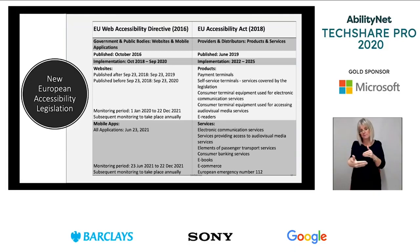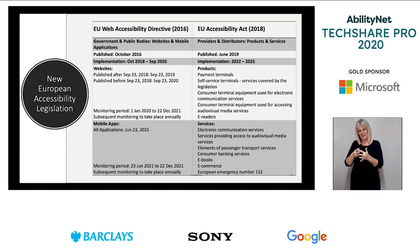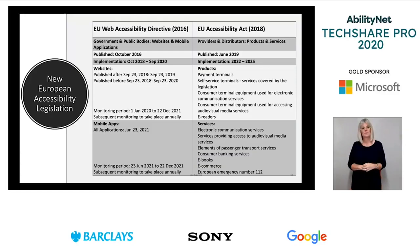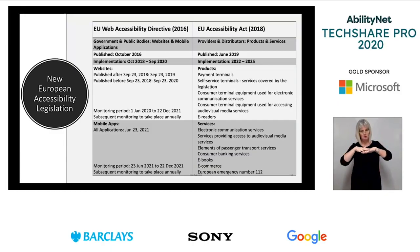In addition, Section 508 of the US Rehabilitation Act governs accessibility of ICT in the Federal Government and has a counterpart in the EU's EN 301549 accessibility requirements suitable for public procurement of ICT products and services in Europe. Section 508 was refreshed in 2018 to WCAG 2.0 Level A and AA in a coordinated effort aimed at international harmonisation with European Commission work on EN 301549.